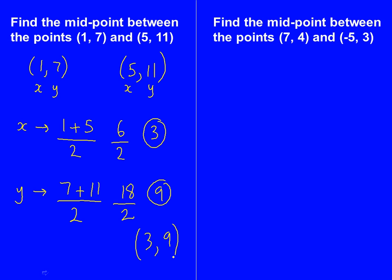Let's have a go now at a slightly harder question. So we'll use exactly the same method. I'm going to write down the two coordinates. 7, 4, minus 5, 3. And again, I'm just going to write x and y to show you the first number is always the x. The second number is always the y.